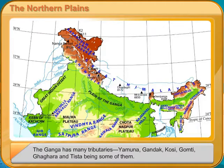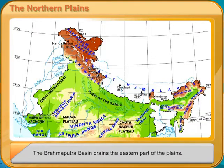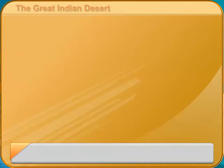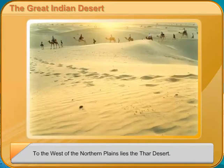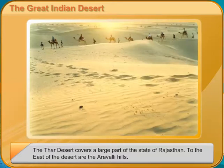The Brahmaputra Basin drains the eastern part of the plains. To the west of the Northern Plains lies the Thar Desert, which covers a large part of the state of Rajasthan. To the east of the desert are the Aravalli Hills. The desert is sandy and dry, with sand dunes — hills of loose sand blown about by the wind.